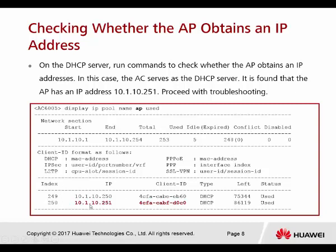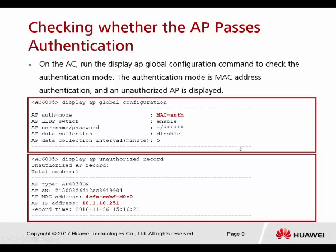You can see which IP address has already been offered. Then run the AP global configuration command to check the authentication. The authentication mode is MAC address authentication. Using 'display AP unauthorized record', when there are APs not yet added to your controller, those APs will appear in the unauthorized record. This is one of the APs that hasn't been added to the controller.